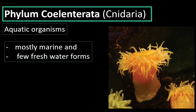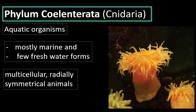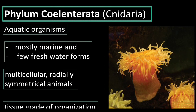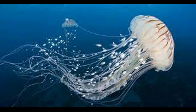Cnidarians are multicellular organisms with a tissue grade of organization — they have muscular tissue and epithelial tissue. They have radial symmetry, meaning the body can be divided into two equal parts from top to bottom through any number of lines. Jellyfish also belongs to this phylum.